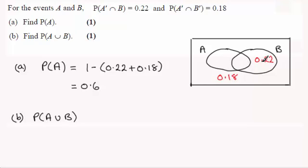So it's got to be all of what you see in A, which we worked out is 0.6, plus the 0.22. So this is going to be equal to 0.6 plus 0.22. And that comes to 0.82.